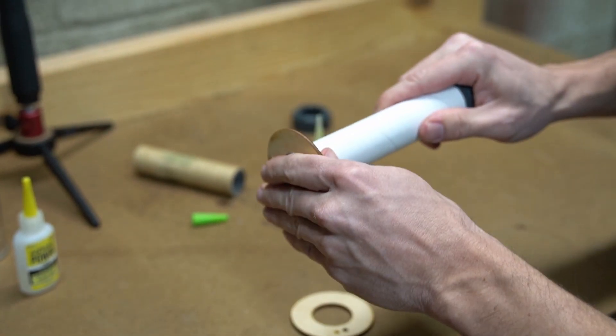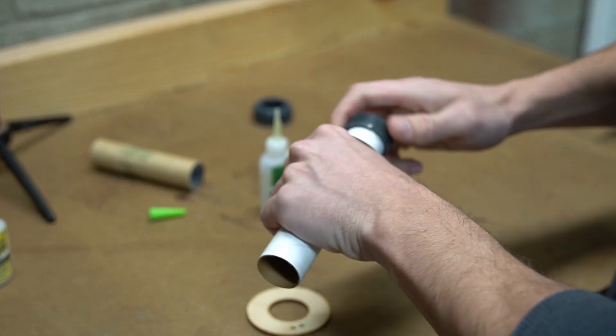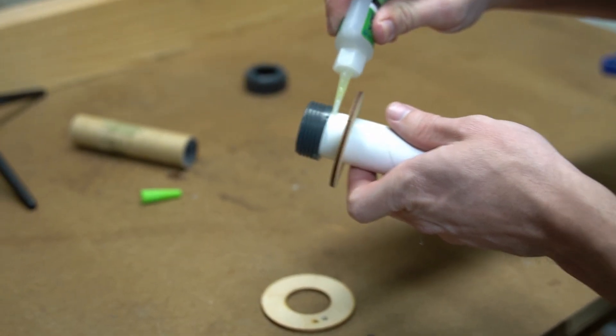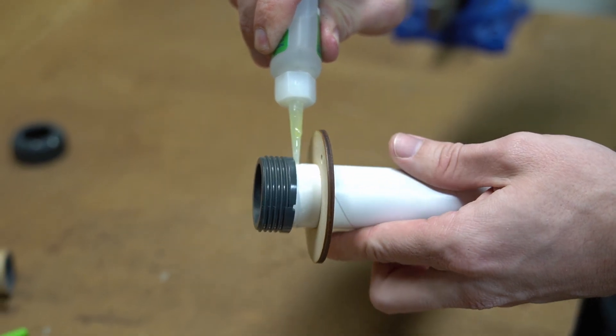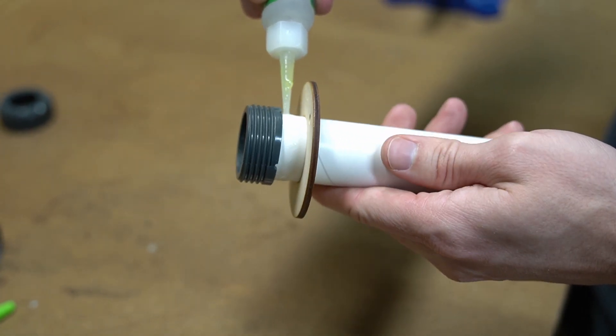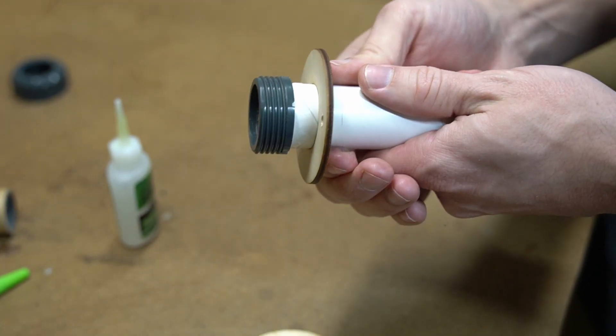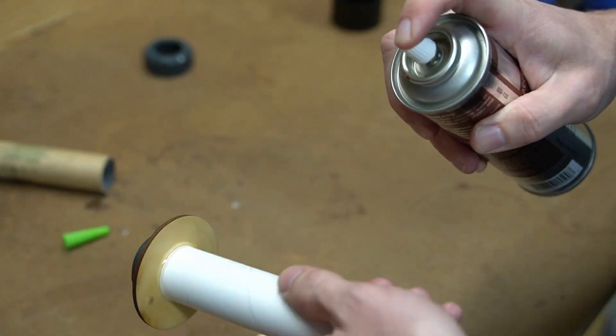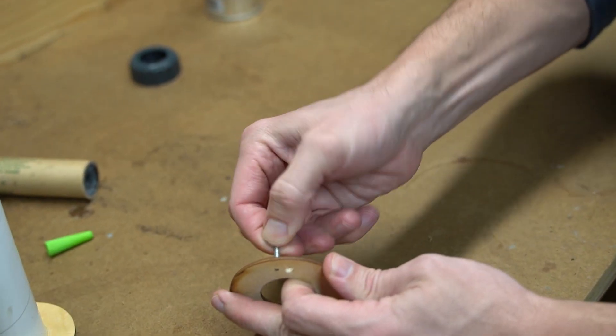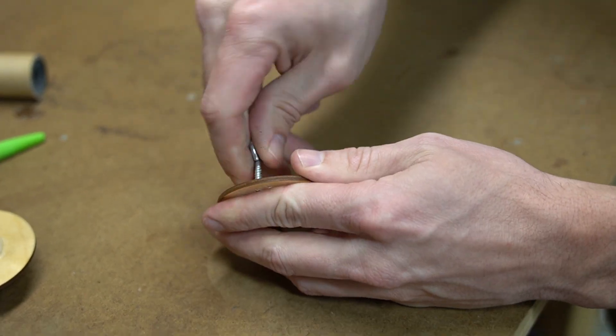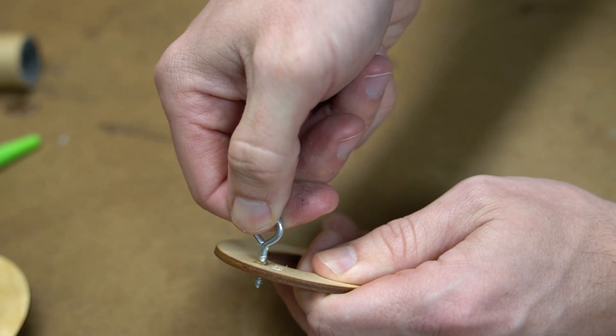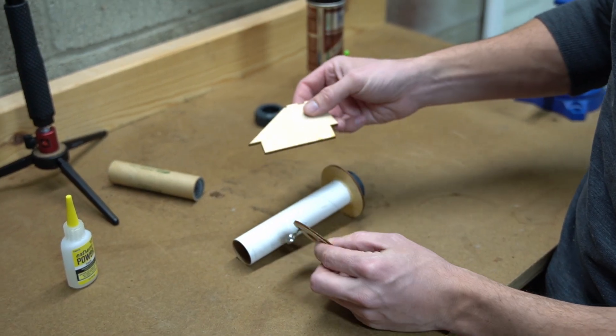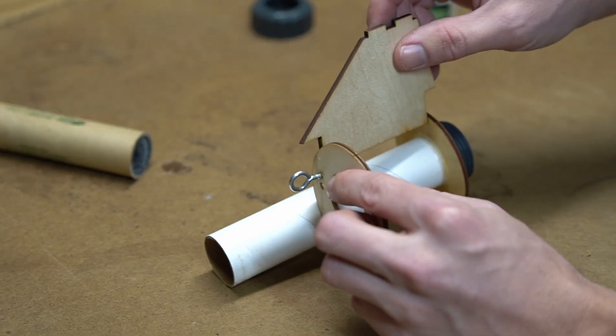Just glue on the lower motor mount. This is going to butt up against the threads, so we don't have to worry about spacing anything out yet. I'm going to use one of the fins to set the spacing between the two.